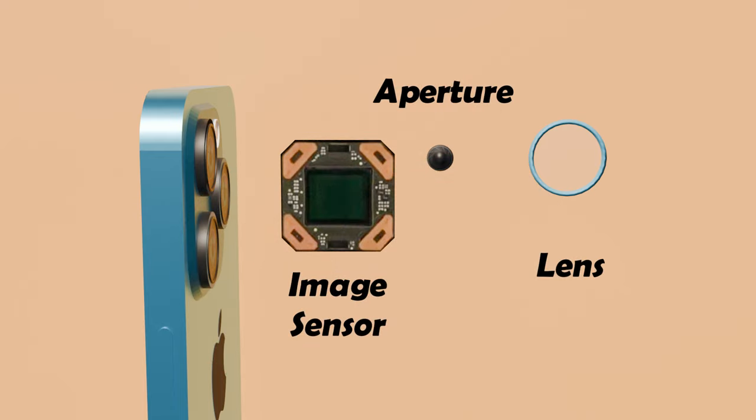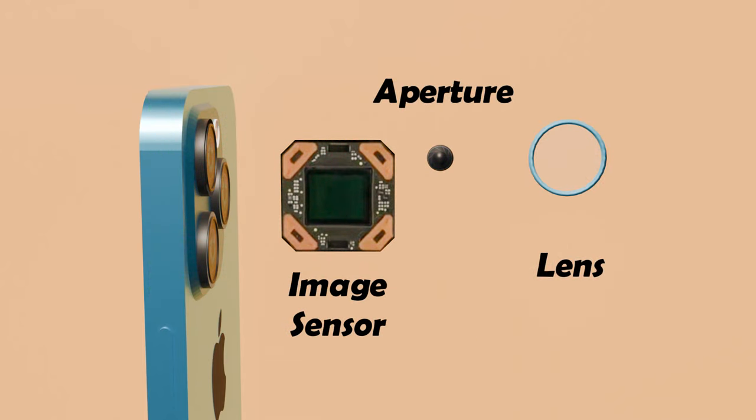When you take a photo, each pixel captures information about the light it receives. This information is stored in the form of an RGB combination. The more pixels your camera has, the higher the resolution of your photos, resulting in more detail.